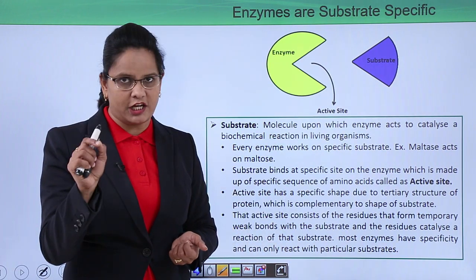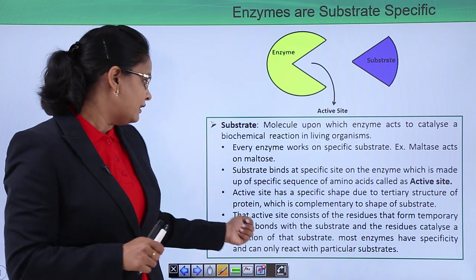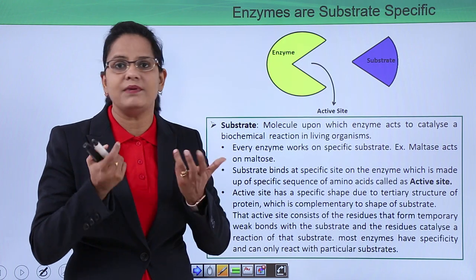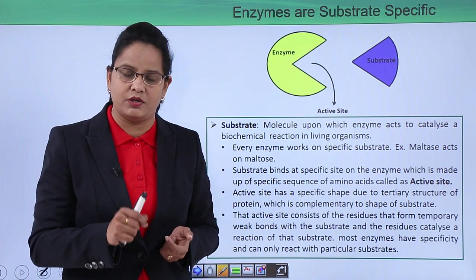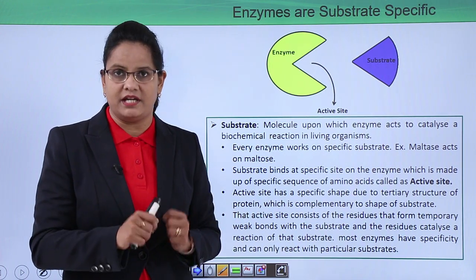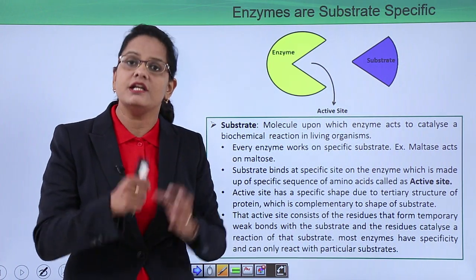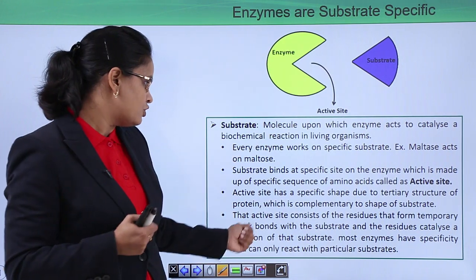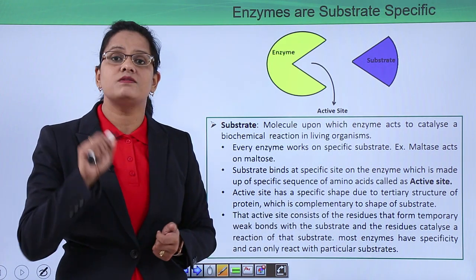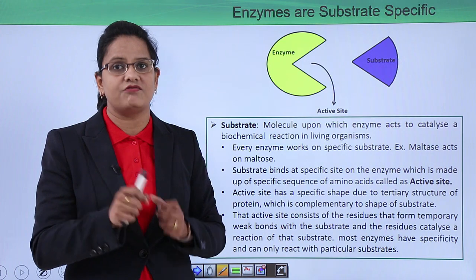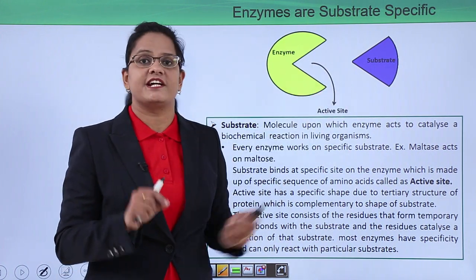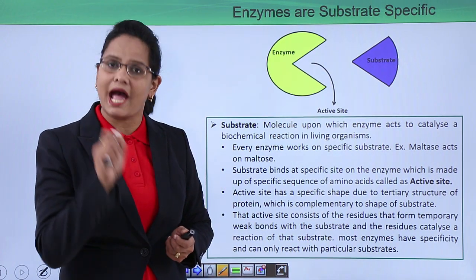The active site has a specific shape because of the tertiary structure of the protein. It consists of amino acid residues that form temporary bonds with the substrate, change its configuration, and ultimately lead to the formation of the end product. The residues catalyze the reaction of the substrate. Most enzymes have specificity and can react with a specific substrate only — that is why enzymes are substrate specific and the substrate binds on the active site.